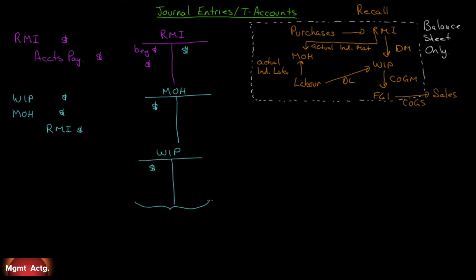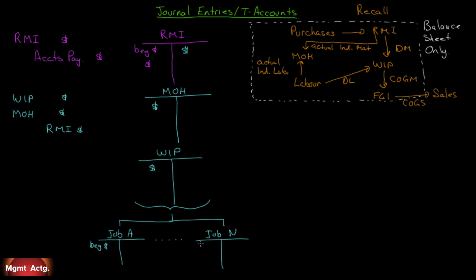Work in process may have sub T-accounts — one for Job A, one for Job B, all the way to Job N. The amount that went into work in process has to be allocated to jobs. Since it's traceable, some dollar amount goes to Job A and some to Job N. The total that went into work in process must equal the sum of what went to each job. Work in process is really just a holding account for all the jobs we're doing.